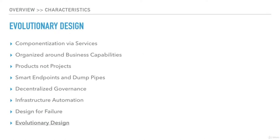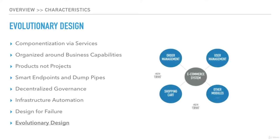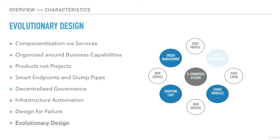The architecture should support the evolutionary design of the system. We should be able to add new services when needed, remove services which are not in use, and split services if needed. For instance, we should be able to replace the user management service with user profile and user login services. The replaceability of services helps the system evolve freely and make component changes independently. The definition provided by Martin Fowler and James Lewis gave an elaborated view on microservices architecture — though all implementations cannot follow all these characteristics, they are expected to follow most of them.